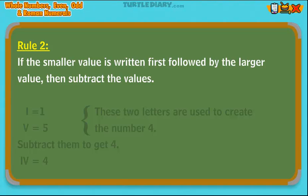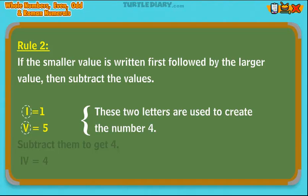I equals 1, V equals 5. I is the lesser value, V is the greater value. I is the smaller value and is written first. V follows the I because it has a greater value than 1. Subtract them to get 4.